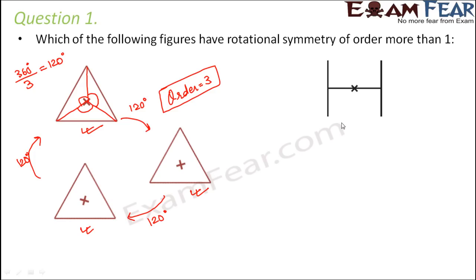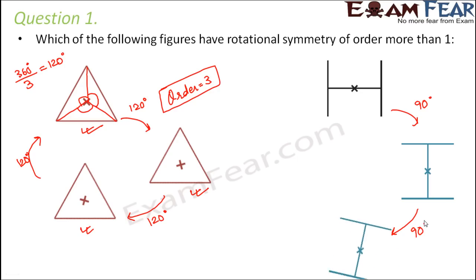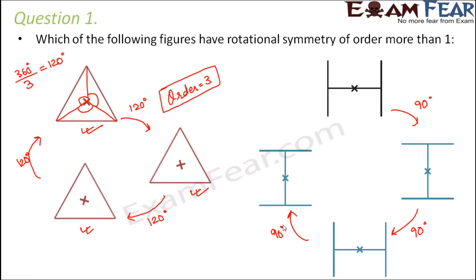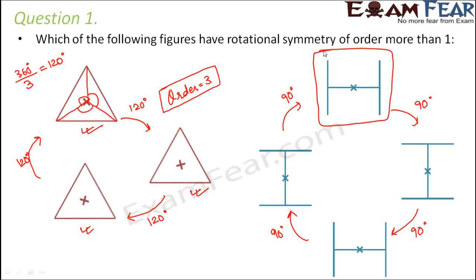Let us look at the next object. By what angle are we going to rotate this object? We will rotate it by 90 degrees. The moment we rotate it clockwise by 90 degrees, it gives a shape. On further rotating by 90 degrees, it comes back to another shape. We go through 90, 180, 270, and 360 degrees. After one complete rotation, how many identical positions do you have? You have two identical positions. Therefore, the order of rotational symmetry is two.